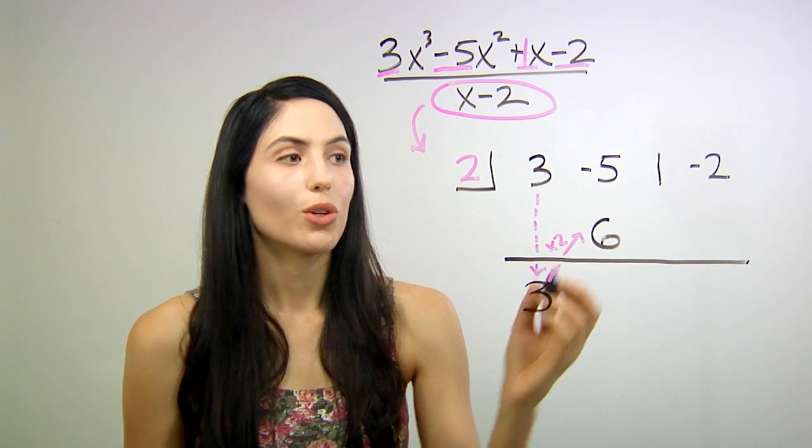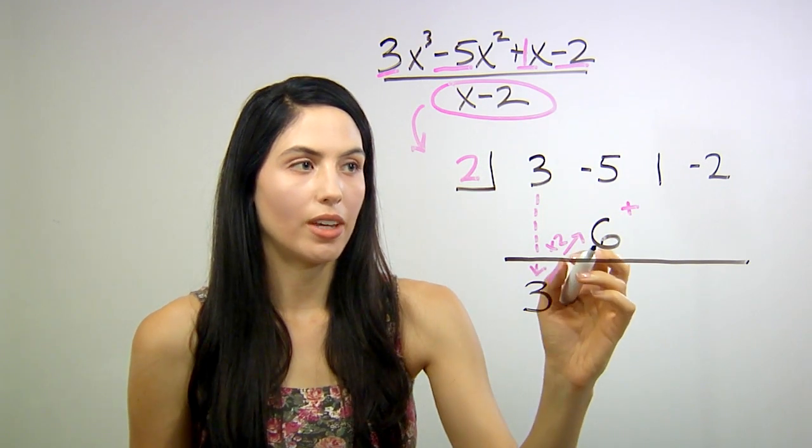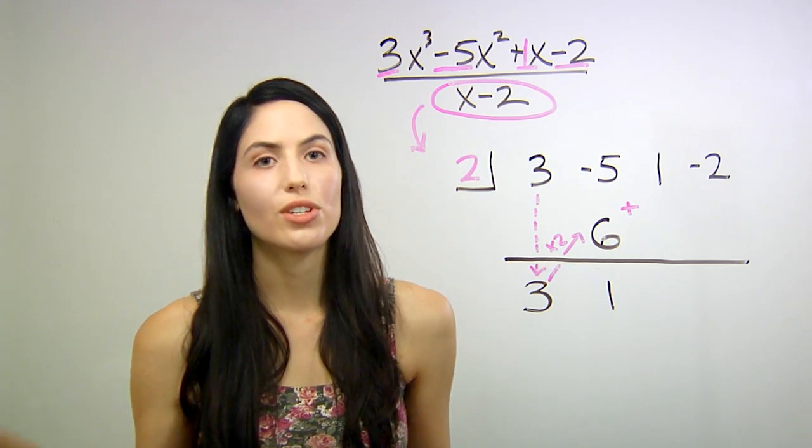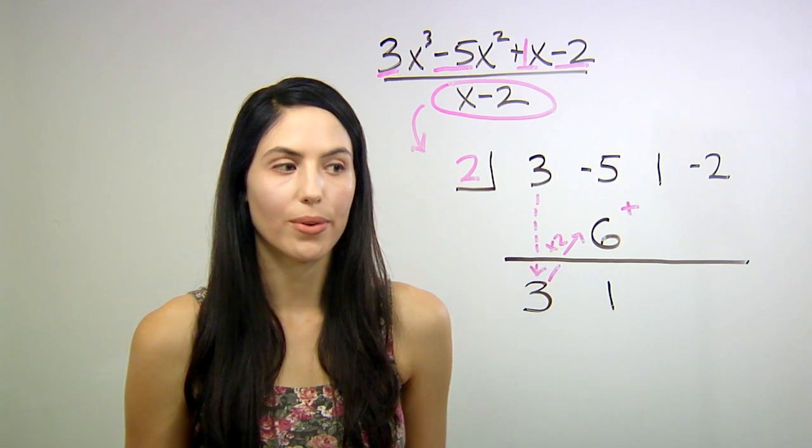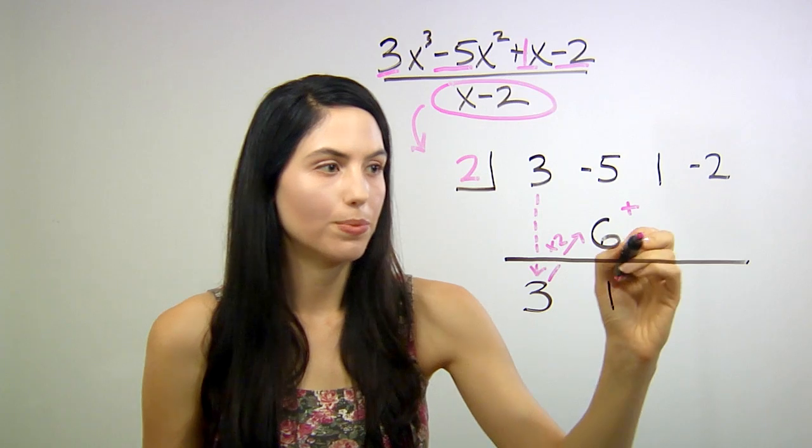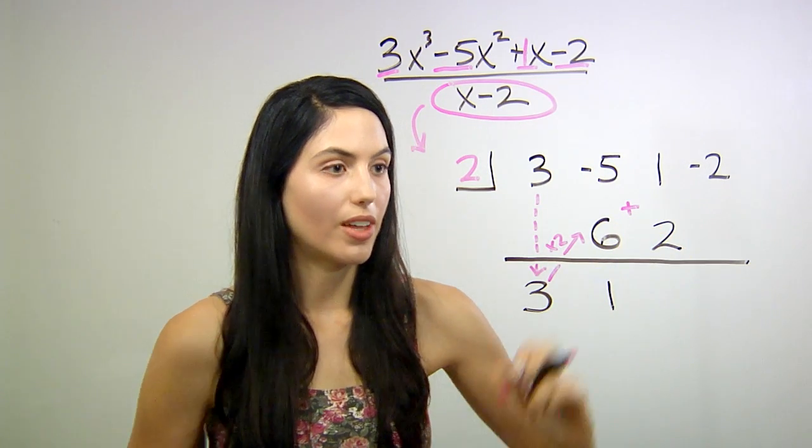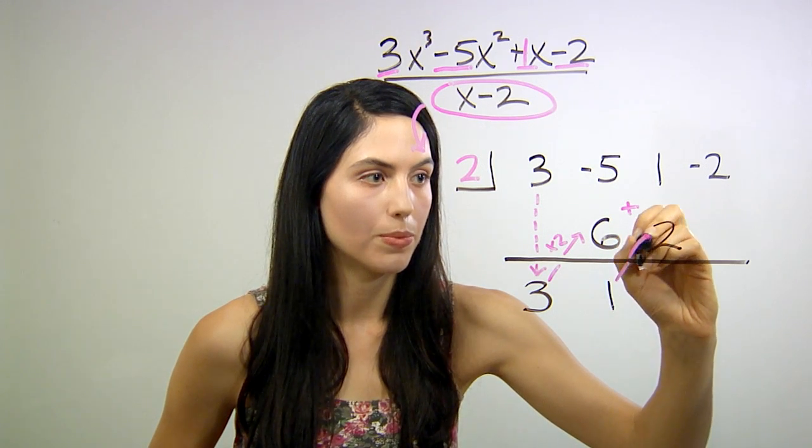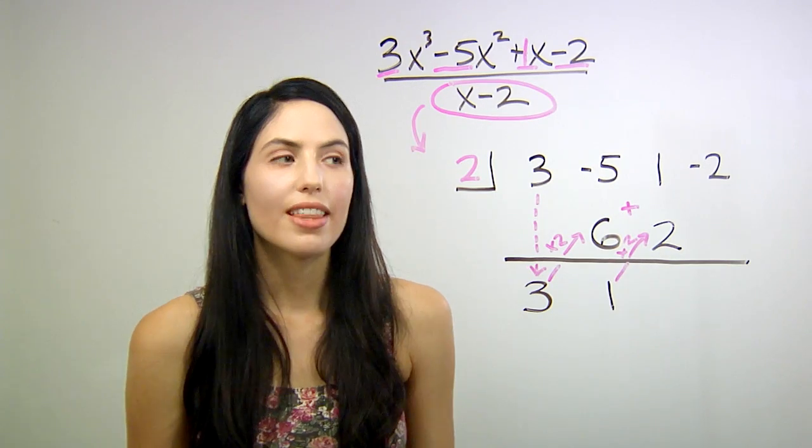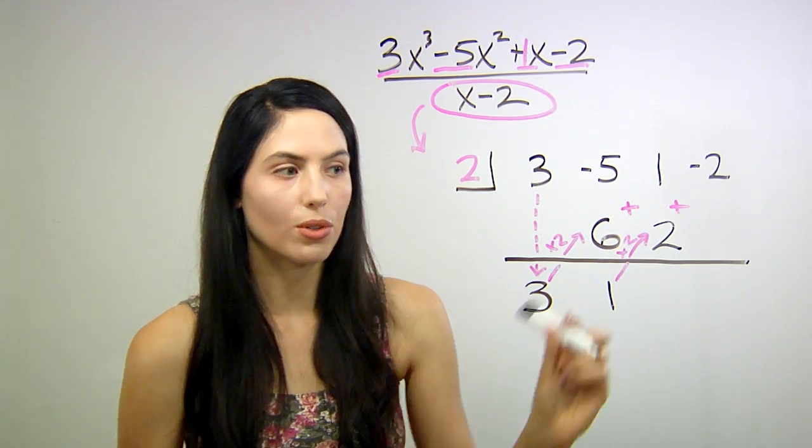Okay, then you're just going to add the two numbers in the column. In this case, we get negative 5 plus 6 is positive 1. Then we're just going to repeat all the steps. So 1, we're going to multiply by our constant, 2, and we get 2. So that step was, again, multiplied by 2. Then again, we're going to add the two numbers in the column. 1 plus 2 equals 3.